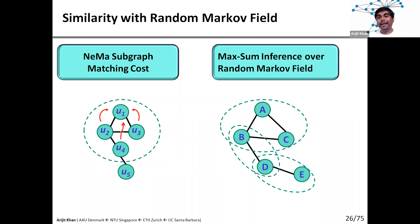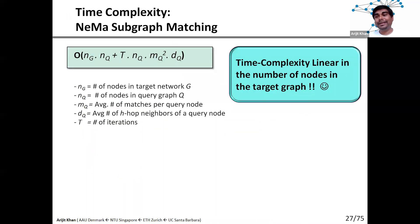This clear similarity motivated us to borrow ideas from inference over random Markov fields to solve our problem. In particular, we developed a technique very similar to iterative loopy belief propagation. In terms of complexity, it is polynomial in the number of nodes and edges in both the query graph and data graph, with t iterations for convergence. For knowledge graphs, usually two to three iterations are enough, because knowledge graphs are sparse and we already find good initial matches based on label matching, limiting the number of candidate nodes.